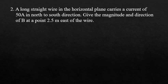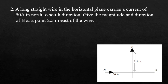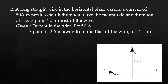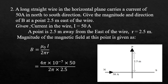Consider a long straight wire in the horizontal plane carrying a current of 50 A in the north-south direction. Find the magnitude and direction of magnetic field B at a point 2.5 m east of the wire. From the diagram, the current flows from north to south. With I = 50 A and R = 2.5 m, using B = µ0 I / 2πR, the magnetic field B is equal to 40 × 10⁻⁷ Tesla.